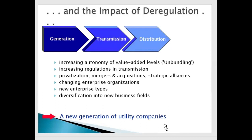We can take the example of the telecom segment in India. Previously it was only owned by the state — BSNL and MTNL — but with deregulation, the monopoly slowly decreased, unbundling happened, and new players were introduced like Reliance and Airtel, who became distributors and retailers. Whenever there is deregulation, a regulatory body controls the whole system — in India for telecom we have TRAI, which controls all rules and regulations.